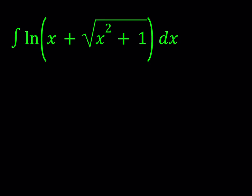Integration by parts basically comes from the product rule, which is the derivative of a product of something like u times v. It looks like this: the integral of u times dv can be written as uv minus the integral of v times du. The purpose here is to turn the integral of u dv into something that is easier to integrate, like v du. If that doesn't work, then it just doesn't work.